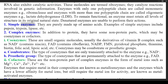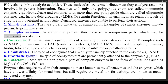(1) Simple enzymes — they are purely made up of amino acids. Examples of simple enzymes include pepsin, trypsin, lipase, etc. (2) Complex enzymes — in addition to protein, they have some non-protein parts, which may be coenzymes or cofactors. (1) Coenzymes — these are small organic molecules, usually derivatives of vitamin B complex, such as NAD⁺ (contains niacin), FAD (contains riboflavin), NADP, FMN, pyridoxal phosphate, thiamine, biotin, folic acid, lipoic acid, etc.